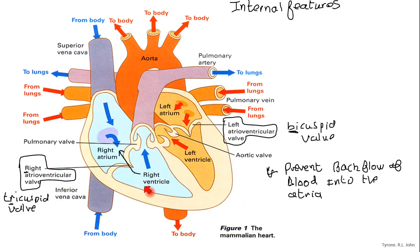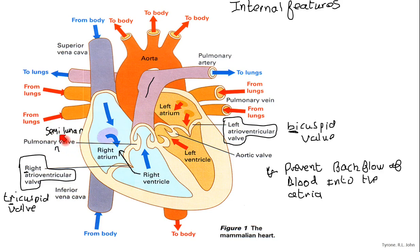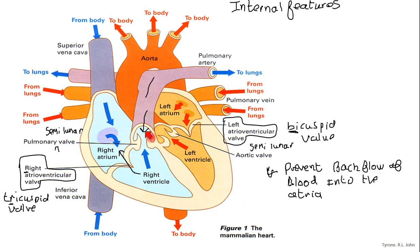We'll talk more about the function of the valves when we do the cardiac cycle. The other two valves are actually within the pulmonary artery and the aorta. The valve in the pulmonary artery is called the pulmonary valve - more technically the pulmonary semilunar valve. The one in the aorta is called the aortic semilunar valve. Those valves function to prevent backflow of blood into the ventricle - they close to prevent blood moving backwards.